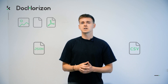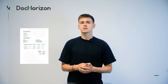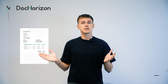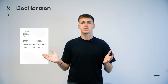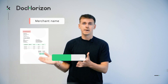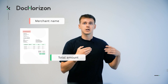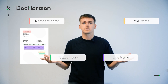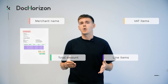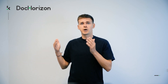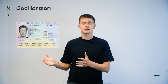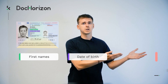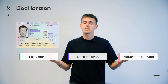For example, if you submit an invoice in PDF form, the Doc Horizon API can return you data like merchant name, amounts, line items, VATs, etc. However, a picture of a passport can give you data such as names, date of birth, document number, you name it.